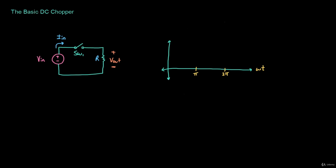Let's draw the output voltage on this axis. From zero to π — this part right here — the output voltage is equal to Vn. In other words, if switch one is on then the output voltage has to be equal to the input voltage. However, from π to 2π we turn the switch off, so the output voltage would be equal to zero — it would look like this. And then of course we repeat that again.